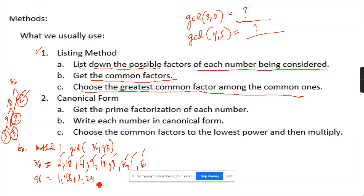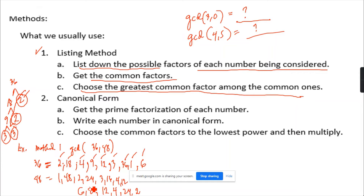For 48: 48 divided by 2 is 24, divided by 3 is 16, divided by 4 is 12. It's not divisible by 5. 48 divided by 6 gives 6 and 8. So factors include 1 times 48, 2 times 24, 3 times 16, 4 times 12, 6 times 8. Now looking at 36 and 48, where is the greatest common factor? 18 is not in 48. 36 is not in 48. But 12 is common — so the answer is 12. The GCD of 36 and 48 is 12.